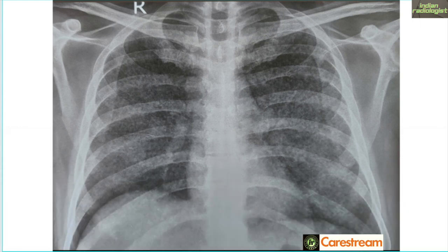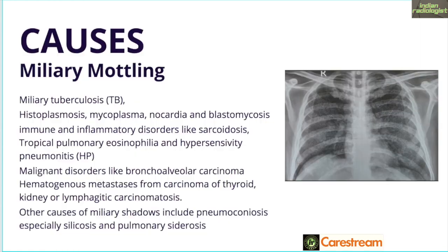This is the first X-ray — a chest X-ray of a child with fever. What we see here is multiple tiny nodules scattered across the lung. For those reporting in India, it is a very simple diagnosis: this is miliary mottling. The cause in our country especially is miliary tuberculosis, which is due to hematogenous spread. But there are other causes — sarcoid is a very close second, and hypersensitivity pneumonitis can also give rise to a picture such as this.